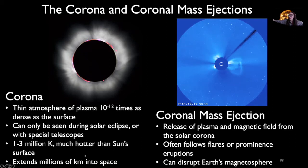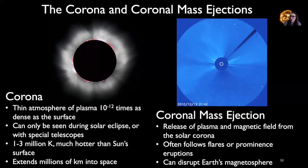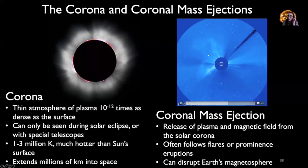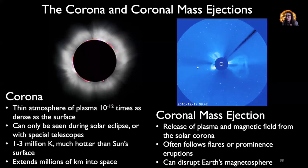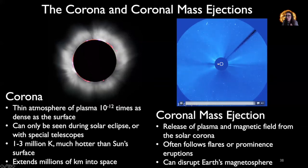The corona extends many millions of kilometers into space. Here's what we call a coronal mass ejection. In this video, the sun is the white circle in the middle, and a space-based telescope has a disc blocking out all the light from the sun's center so we can see the sun's corona. We can then observe these events called coronal mass ejections happening around the sun.